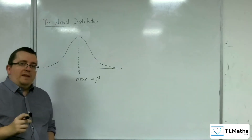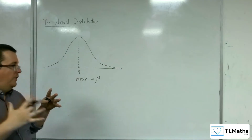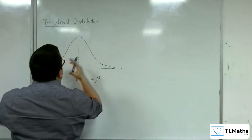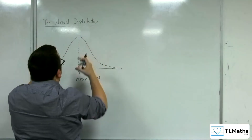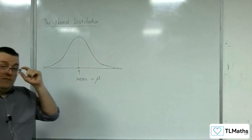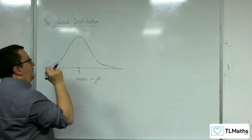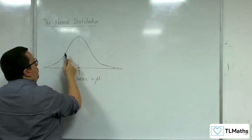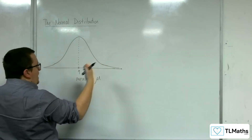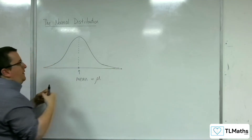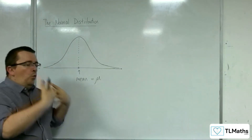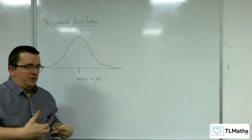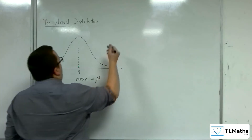The other thing that defines the distribution is how wide it is — not just where the center point is, but how physically wide it is. That depends on the standard deviation. The width and how spread out the data is depends on the standard deviation.